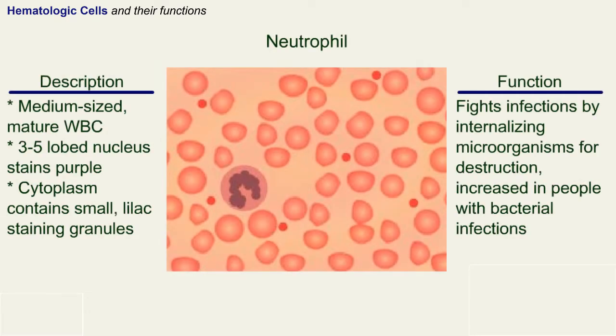Neutrophil: a medium-sized mature white blood cell with a three to five lobed nucleus that stains purple. The cytoplasm contains small lilac staining granules. Neutrophil fights infections by internalizing microorganisms for destruction and is increased in people with bacterial infections.